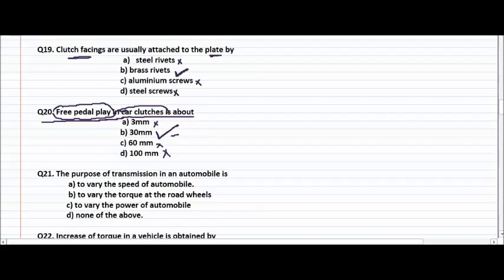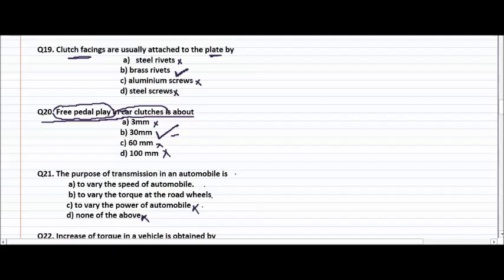The purpose of transmission in an automobile is to vary the speed of the automobile, to vary the torque at the road wheels, or to vary the power of the automobile? The right answer is to vary the torque at the road wheels.